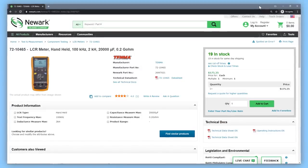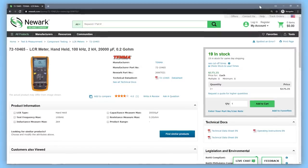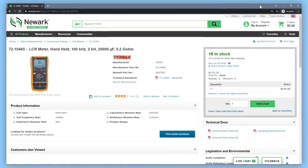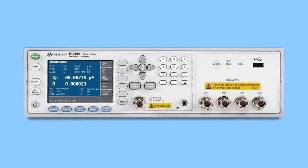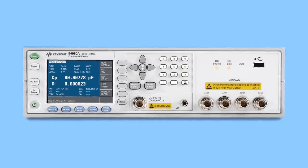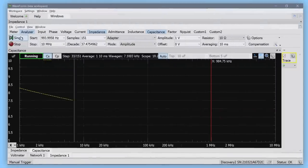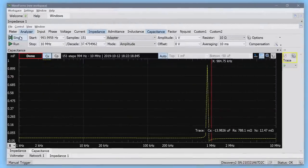For reference, at the time of making this video, the price for this particular model is about $175. As I briefly mentioned, there are also bench-style LCR meters and more advanced impedance analyzers. Some of these sweep with many frequency points and plot the results.